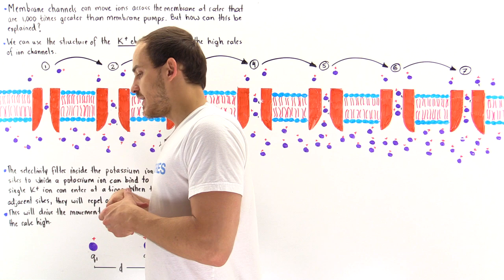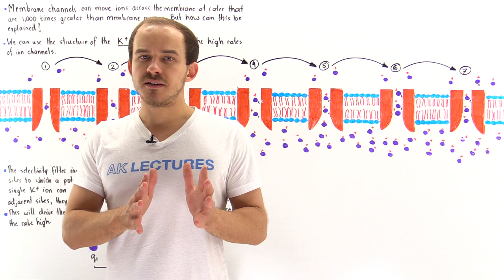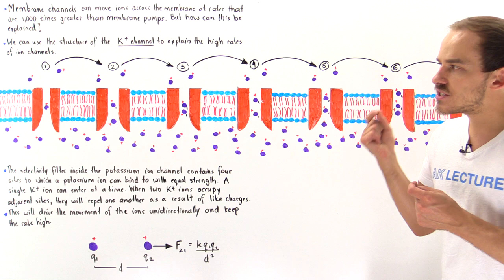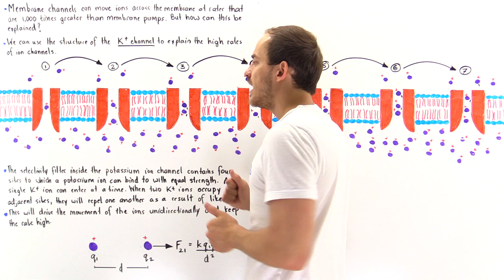The answer is straightforward: it is electrostatic repulsion between two positive charges found in close proximity to one another. As we'll see in a moment, it is this electrostatic repulsive force that drives ions to move very quickly and efficiently across the cavity inside that channel.